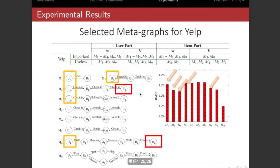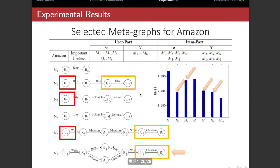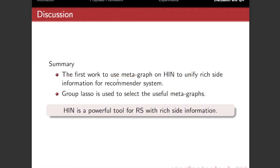In summary, we are the first to use meta-graph on HIN to unify rich side information for recommender systems, and our proposed model can automatically select useful meta-graphs. Therefore, we show that HIN is a powerful tool for nowadays recommender systems with rich side information.